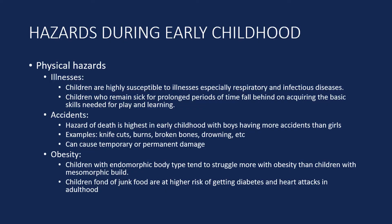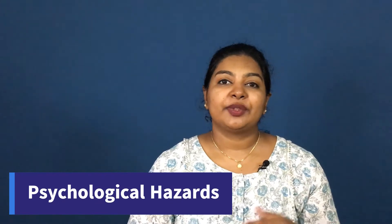A third physical hazard during early childhood is obesity. Obesity is a condition where children overeat or have a natural tendency to gain weight. Children with endomorphic body types have greater tendencies to struggle with weight than those with mesomorphic body types. Children who love junk food and overeat have a greater tendency to develop diabetes and heart problems when they become adults.